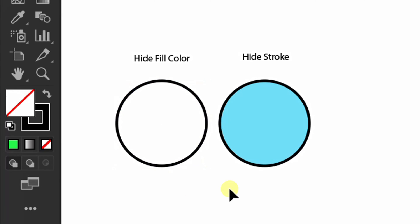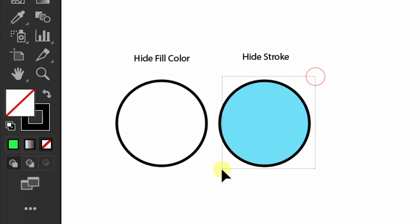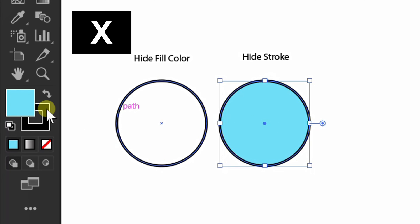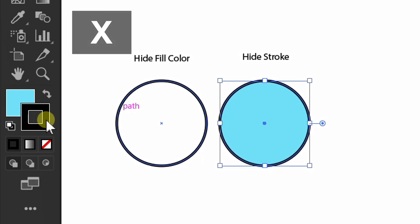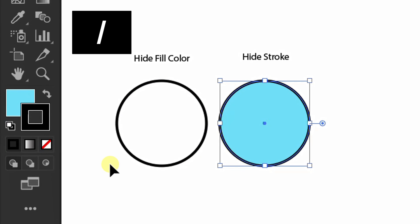And how to remove the stroke — the same way. Object selection. Position the stroke above by pressing X. After that, press the slash.